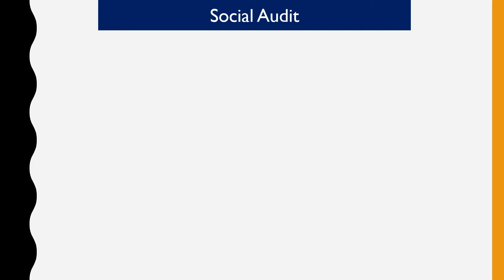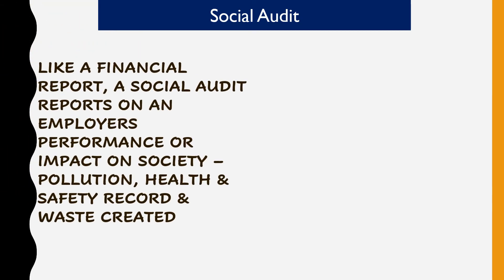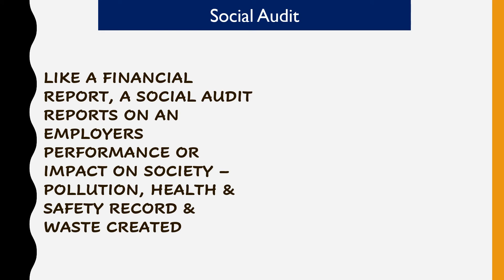An auditor is a person who checks and makes sure that everything is correct and truthful. A social audit, however, is a little bit different. Like a financial report, a social audit reports on a company's performance or impact on society — looking at things like pollution, health, safety records, and whether the company has been releasing waste into the environment. So besides the financial report, a social auditor reports on a company's social impact on society.